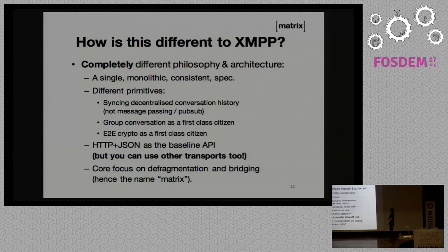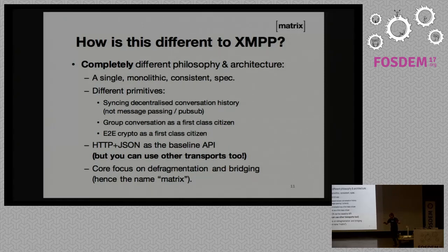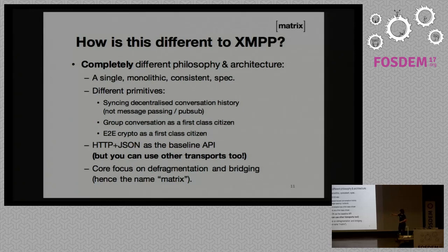We have end-to-end encryption, albeit still in beta, as a first-class citizen throughout the whole thing, because if you are replicating data everywhere, you obviously want to encrypt it so that the system admins aren't reading all your messages. And we're using HTTP and JSON — but if people are thinking this is just XMPP with JSON and HTTP, you're missing the point completely. This is basically an open database. Think of it like Cassandra, where anybody can spin up a node anywhere in the world.